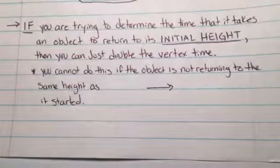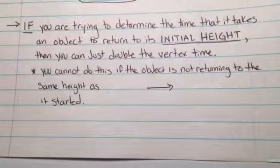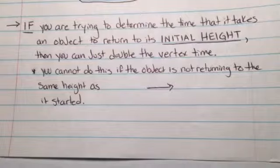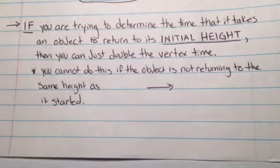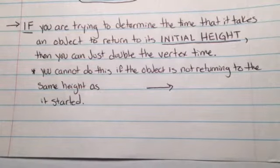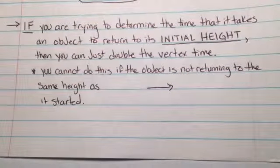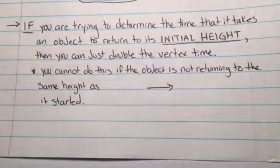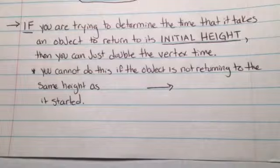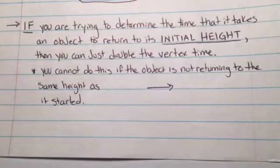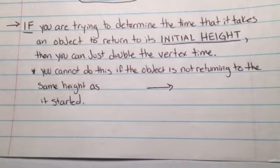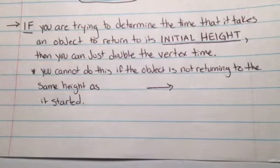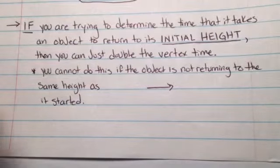When I say initial height, I mean when the object starts off on the ground and you're being asked when will it return back to the ground. You can't do this if the object is not returning to the same height as it started. For example, if an object starts at four feet above the ground and you ask when will it return to the ground, they're not starting and finishing at the same exact heights. So you can't just double the time, because that vertex time is not the exact center of where the ball started and where it returned to the ground.